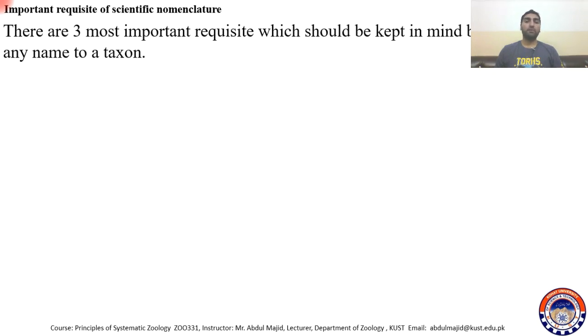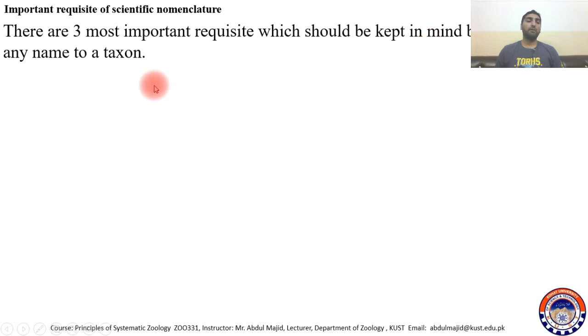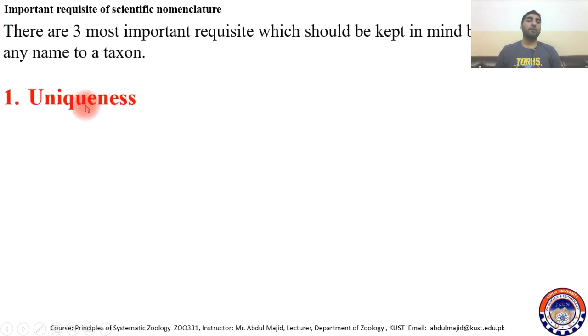What are the important prerequisites of scientific nomenclature? There are three most important prerequisites or requisites which should be kept in mind before giving a name to any taxon. The first important requisite is uniqueness.